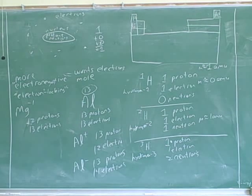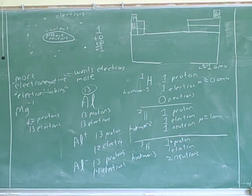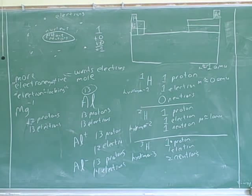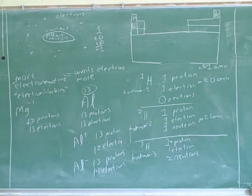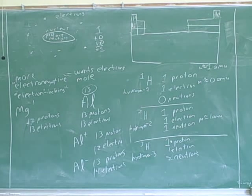Now, there's something a little bit weird about that. You might ask: it seems like the masses should all be integers, right? If a proton has a mass of 1 and a neutron has a mass of 1, then it seems like the only possible masses are integers — 1, 2, 3, 4, 5. So how do they get weird numbers like 24.31?